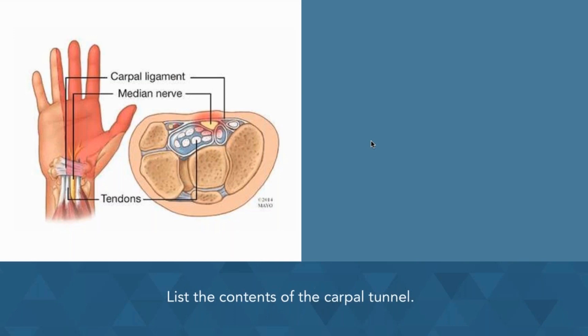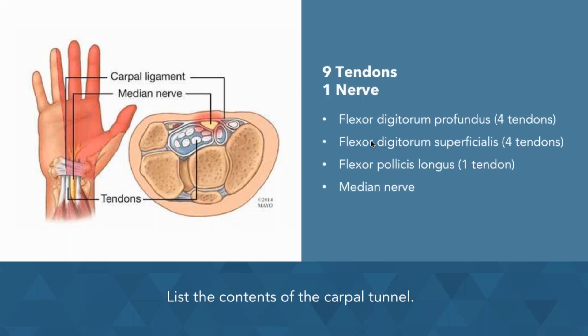This could be a difficult subject for some, as there are 10 structures that pass through the carpal tunnel. The important thing to note is there are nine tendons and one nerve.